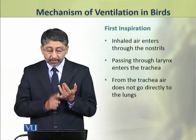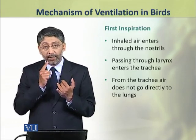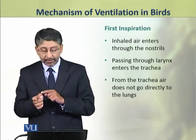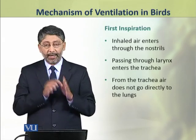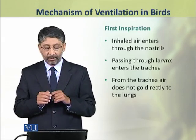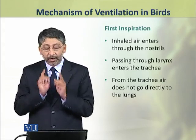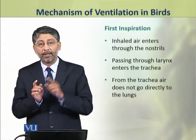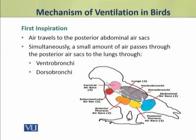During the first inspiration, the inhaled air enters through the nostrils and passing through the larynx, it enters the trachea. From the trachea, air does not directly enter the lungs. Air rather travels to the posterior abdominal air sacs. Simultaneously, a small amount of air passes through the posterior air sac to the lungs through the ventrobronchi and dorsobronchi.